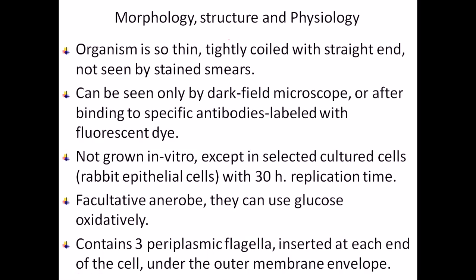Looking at the morphology and structure of Treponema, this organism is so thin and tightly coiled with straight ends that it cannot be seen by stained smears or by normal light microscopy. We need to visualize it only under dark field microscopy, where the field is made darker. We can also find this structure using fluorescent microscopy by tagging a fluorescent dye to the spirochete cell and visualizing the fluorescence emitted.